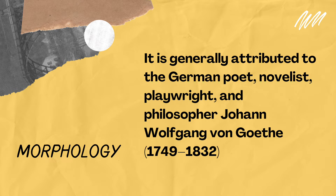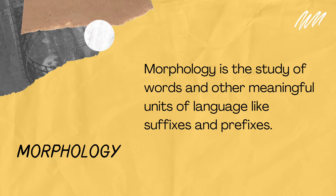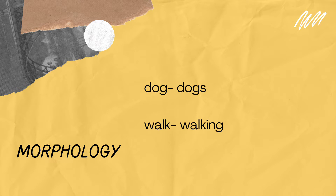Morph means shape or form, and morphology is the study of form or forms. Morphology is the study of words and other meaningful units of language like suffixes and prefixes. A morphologist would be interested in the relationship between words like dog and dogs, or walk and walking, and how people figure out the differences between those words.